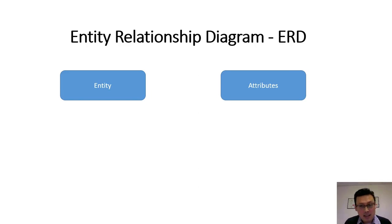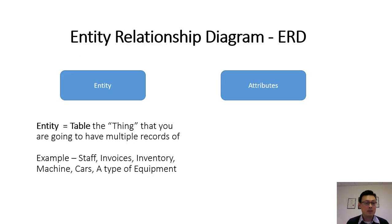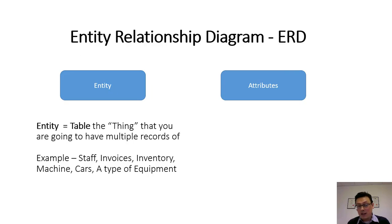What's in the entity relationship diagram? It's really made up of two things. The first is the entity, which is basically the table of information — the thing that you're going to have multiple records of. For example, you might have multiple staff and want to keep records of your staff, or you might have invoices where you're sending out lots of invoices and want to keep records of those.